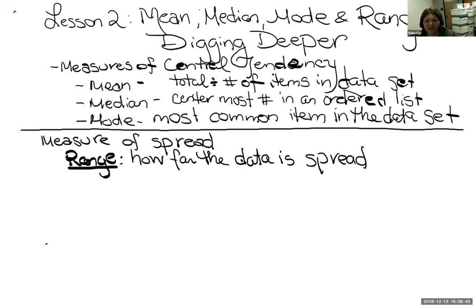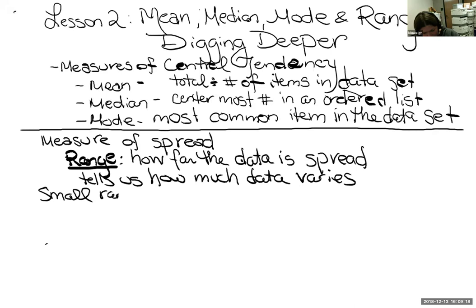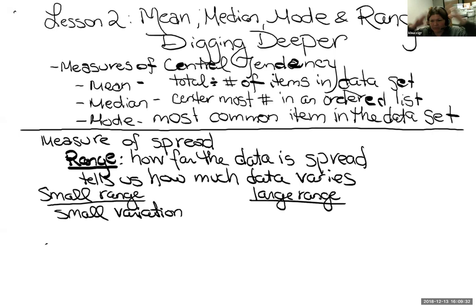Range, unlike mean, median, and mode, does not need to look like it fits in the center of a list. A range could be really tiny or really large. The smaller the range is, the less the data varies. Small range means all the numbers are close together — small variation. Large range means the numbers are spread out all over the place — large variation.